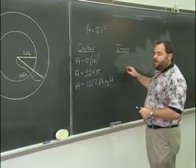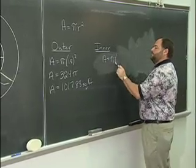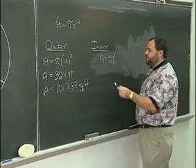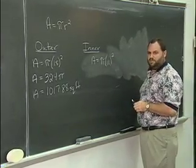Now we'll find the area of the smaller circle, the inner circle. The radius of that was 11 feet so there's the calculation we need to do for this.